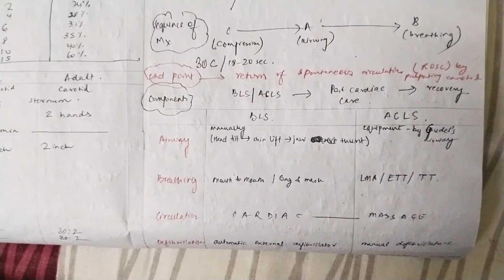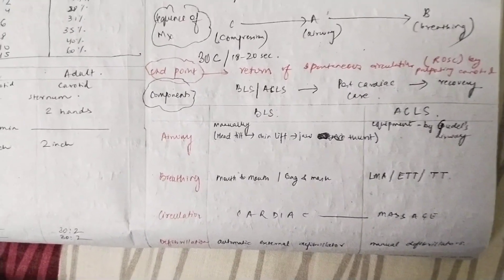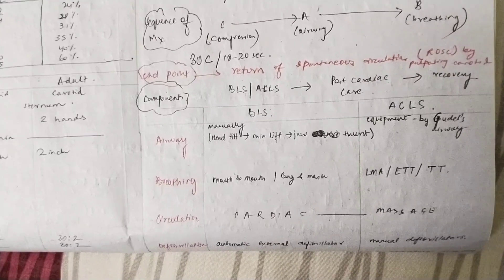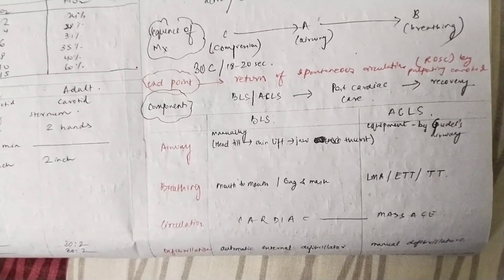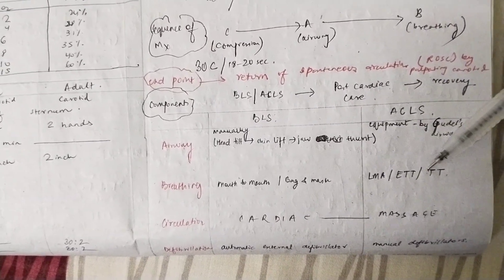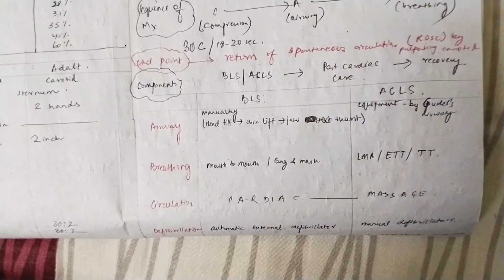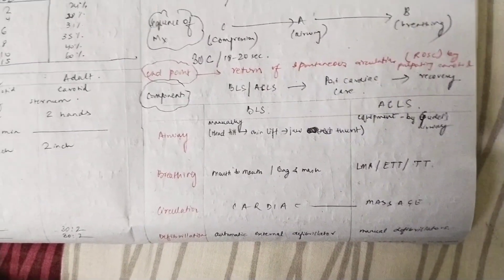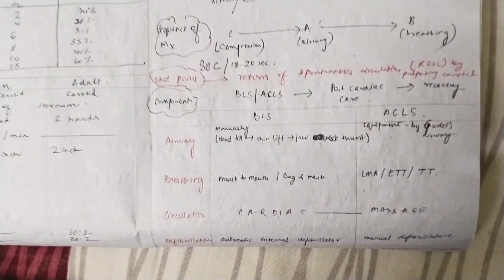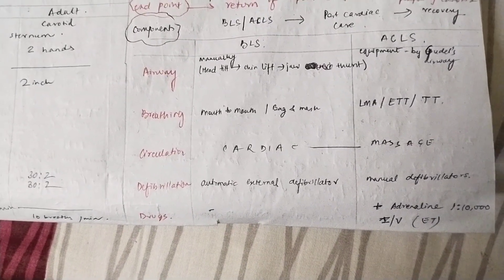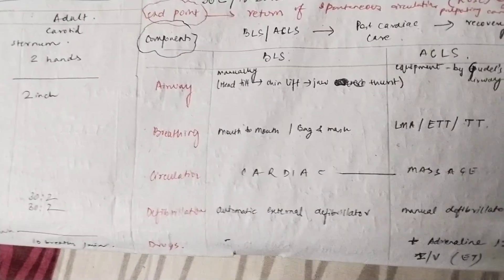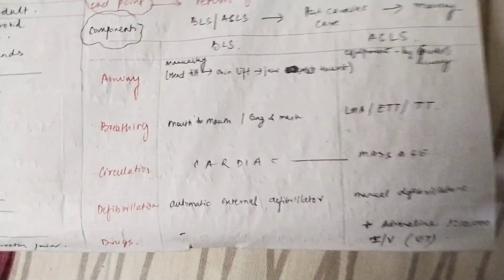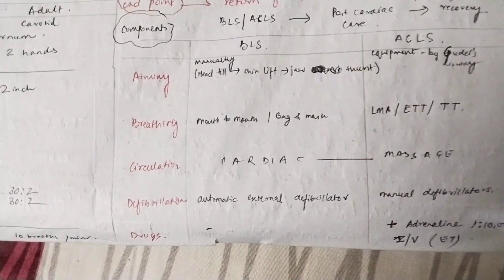For breathing: BLS gives mouth-to-mouth breathing or bag-to-mask ventilation. But in ACLS, this is done using a laryngeal mask airway (LMA), endotracheal tube, or tracheostomy tube. For circulation, both BLS and ACLS use cardiac massage — I will discuss this in detail shortly. For defibrillation: in BLS, an automatic external defibrillator is used; in ACLS, a manual defibrillator is used.